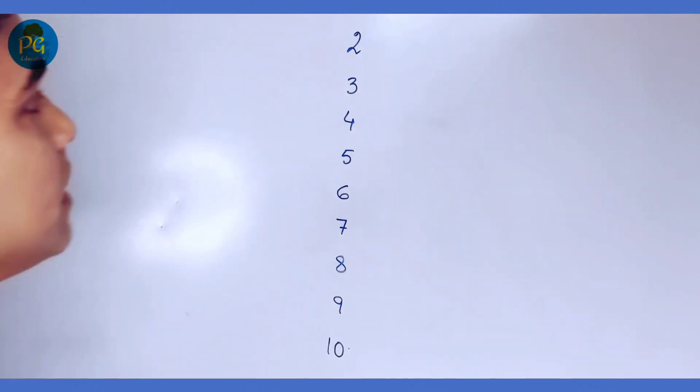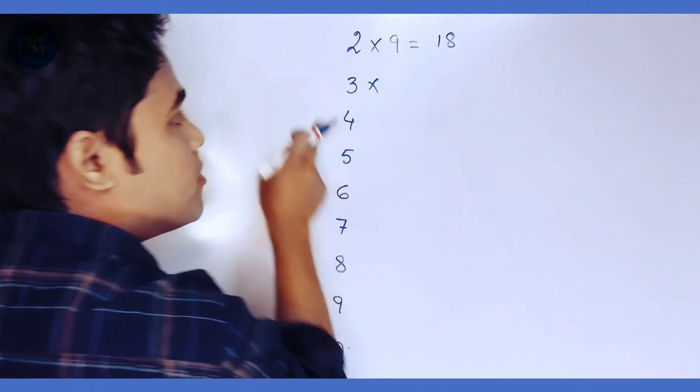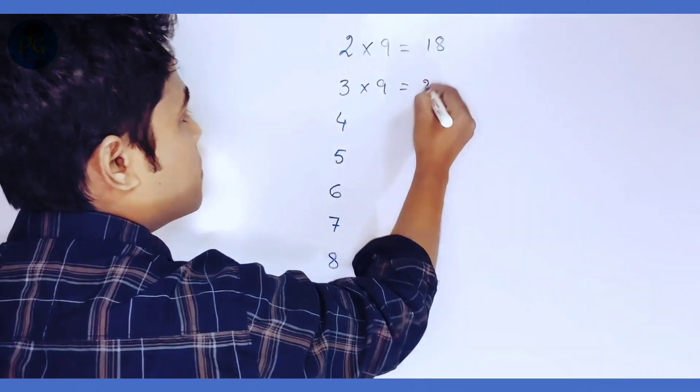Which number is in your mind? If you select 2, then multiplying 2 by 9, it becomes 18. If you select 3, then multiplying 3 by 9, it becomes 27. So this way.